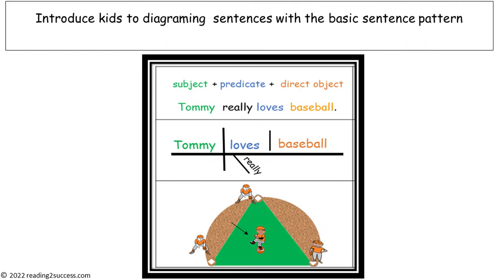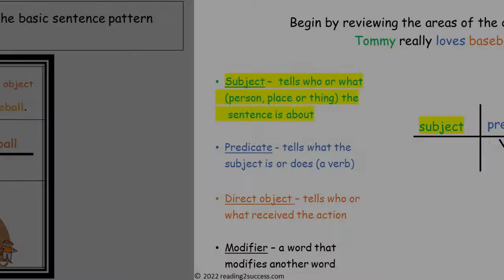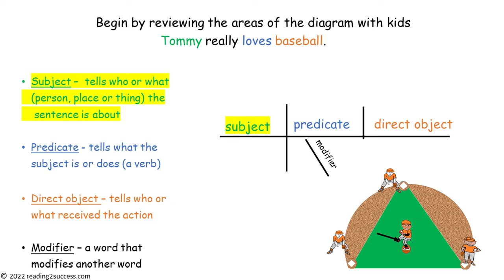Begin by introducing kids to diagramming sentences with the basic sentence pattern: Subject, Predicate, and Direct Object. The teaching sentence for this pattern is: Tommy really loves baseball.